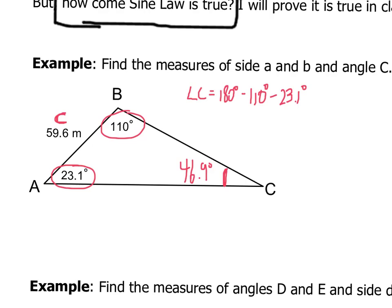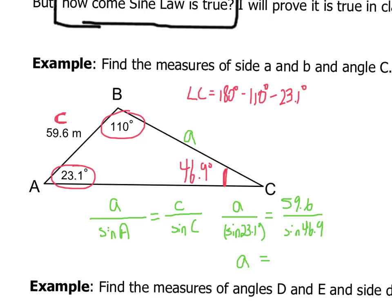Now, it's going to be a little bit more work to find side a, given what we know, but it's going to be something that we can do using sine law. So we set up sine law. I'm looking for angle A, so I'll put that at the top. I know sine A, if I type that into my calculator. I know little c, and I know sine C. So filling in this equation, we now have a over sine 23.1 degrees equals 59.6 over sine 46.9. Now, how do I get a by itself? Well, notice that below a, I've got sine 23.1. So if I multiply both sides of the equation by sine 23.1, what happens?